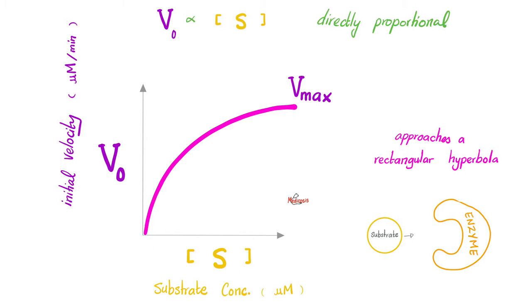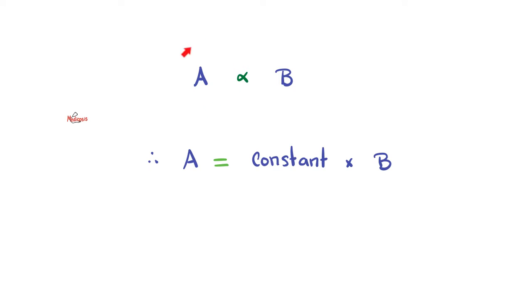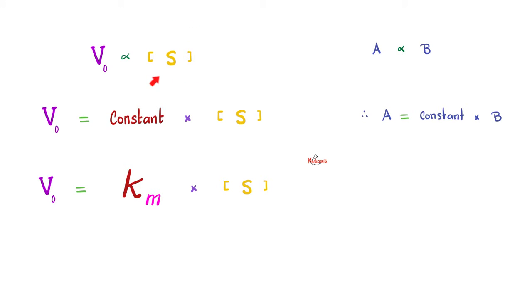So here is Michaelis-Menten, which we discussed before. Here is the concentration of the substrate, and here is the initial velocity of the reaction. And the maximum that you can reach is the Vmax. The greater the concentration of the substrate, the faster the reaction rate. That's why we're going upwards. It's a direct relationship. Let's review Michaelis-Menten. If A is directly proportional with B, therefore you can remove the sign and put equal constant times B. So if we say that the greater the substrate concentration, the greater the velocity of the reaction, we can argue that velocity equals constant times the substrate concentration.